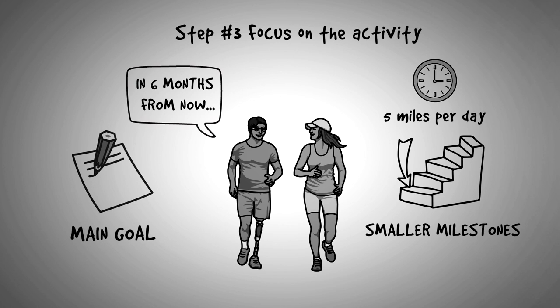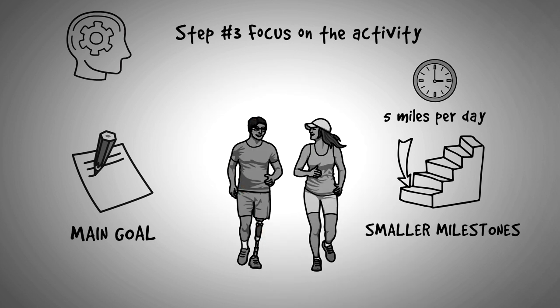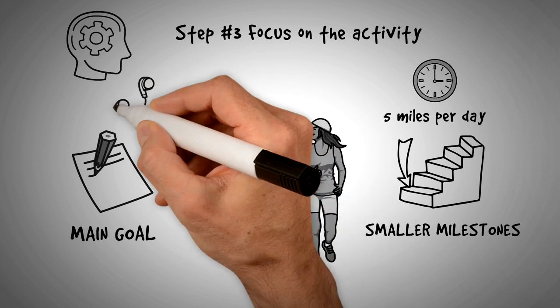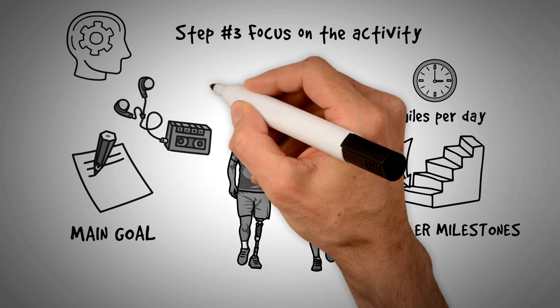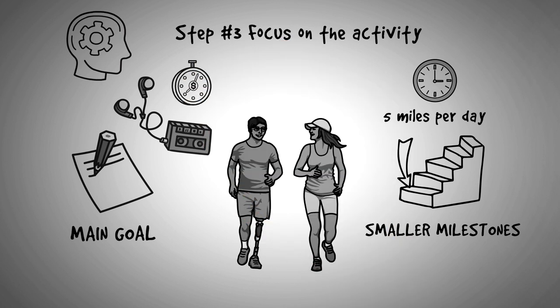Step number three, focus on the activity. Flow comes from focus. If you find it hard to achieve the flow state during your running sessions, for instance, try listening to music while you run or pay close attention to your distance or to your speed or to your heartbeat. Those little twists might help you focus solely on that one activity.